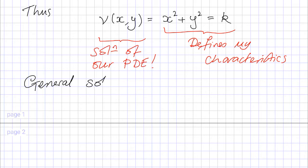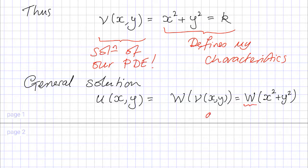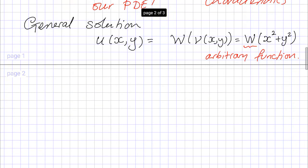Once we've obtained this information about the characteristics, we can simply write down the general solution. The general solution is u of x and y equals some arbitrary function w of mu of x and y, which in our case is an arbitrary function of x squared plus y squared.